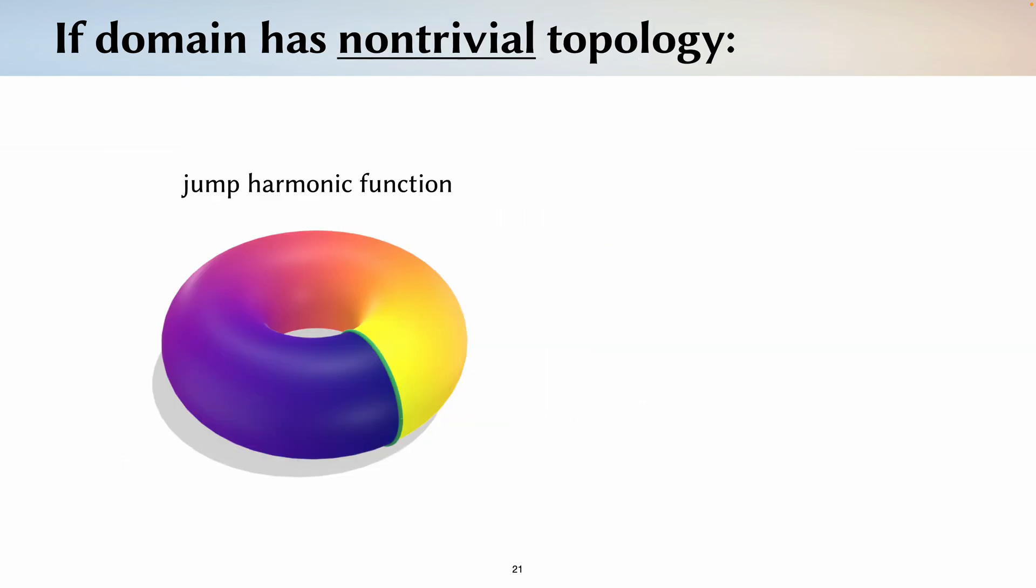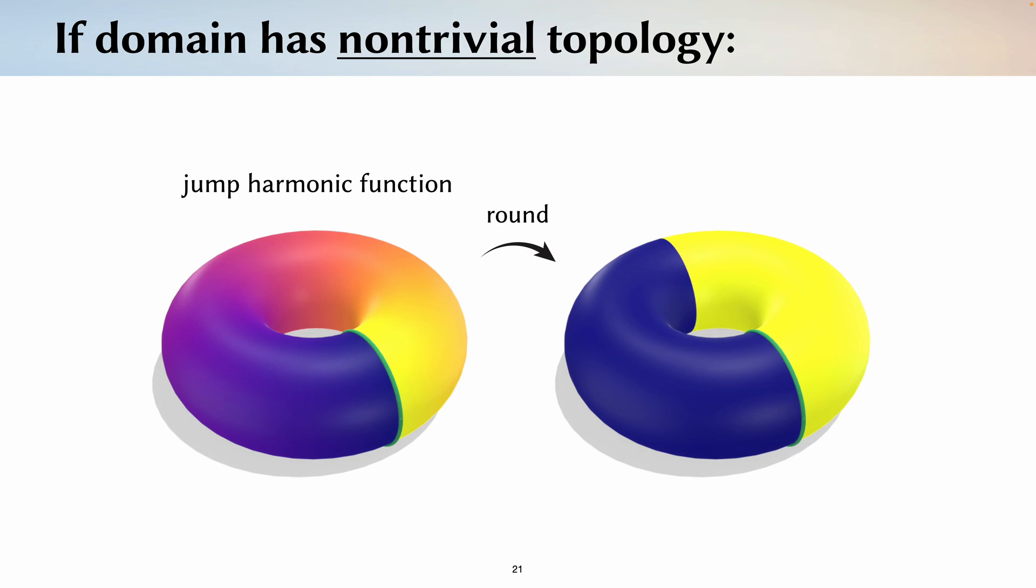However, if our domain has non-trivial topology, we can't simply round the jump harmonic function. If we have non-bounding curves, we end up getting spurious discontinuities that don't correspond to anything in the input. So we have to take extra steps on domains of non-trivial topology that might have non-bounding curves.